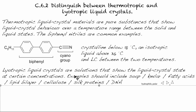Examples of lyotropic liquid crystals include soaps, Kevlar, fatty acids, lipid bilayers in cell membranes, cellulose in plant cell walls, silk proteins, and DNA.